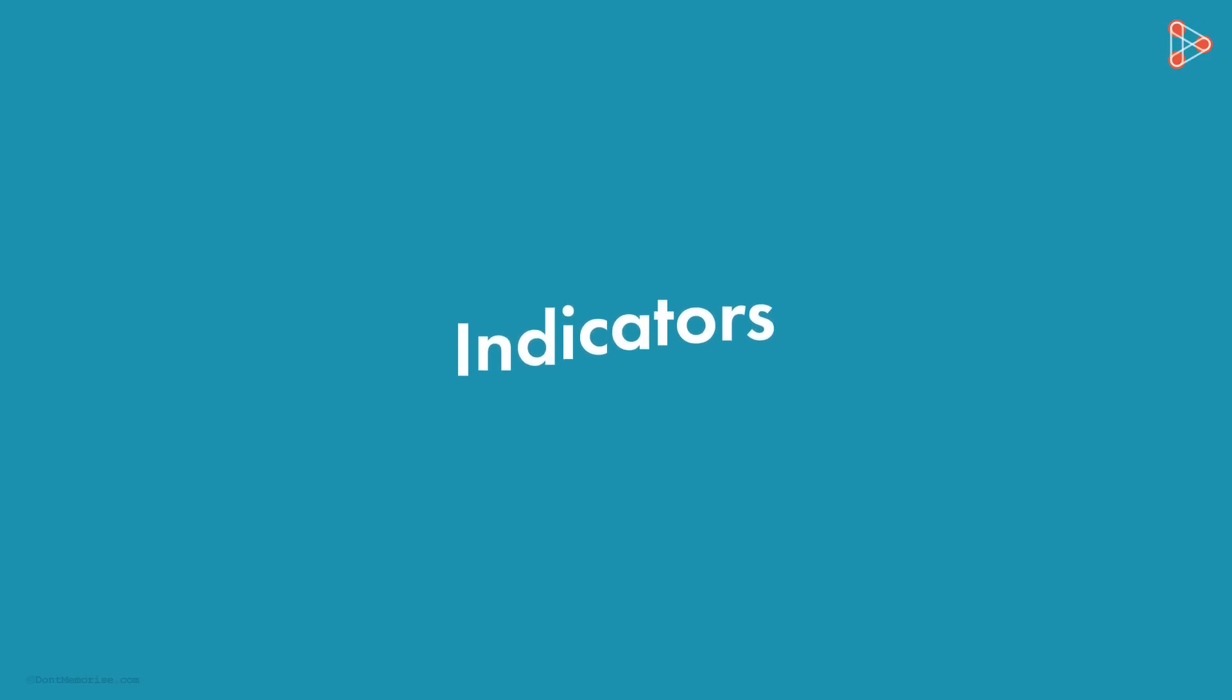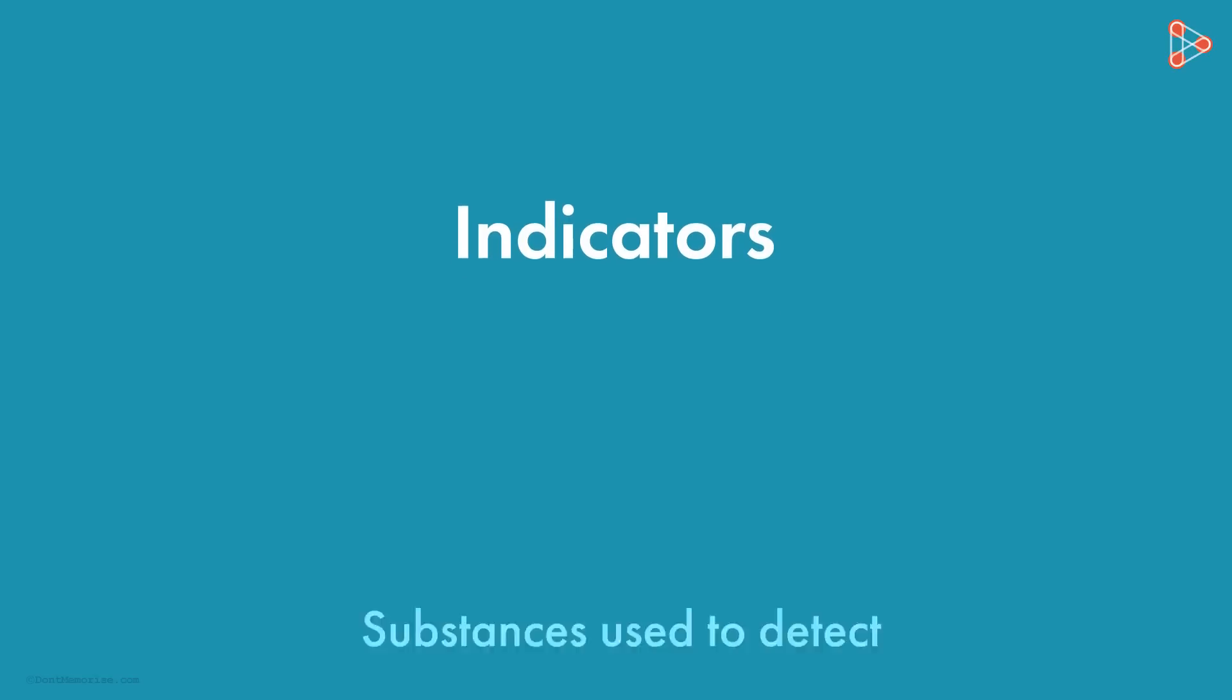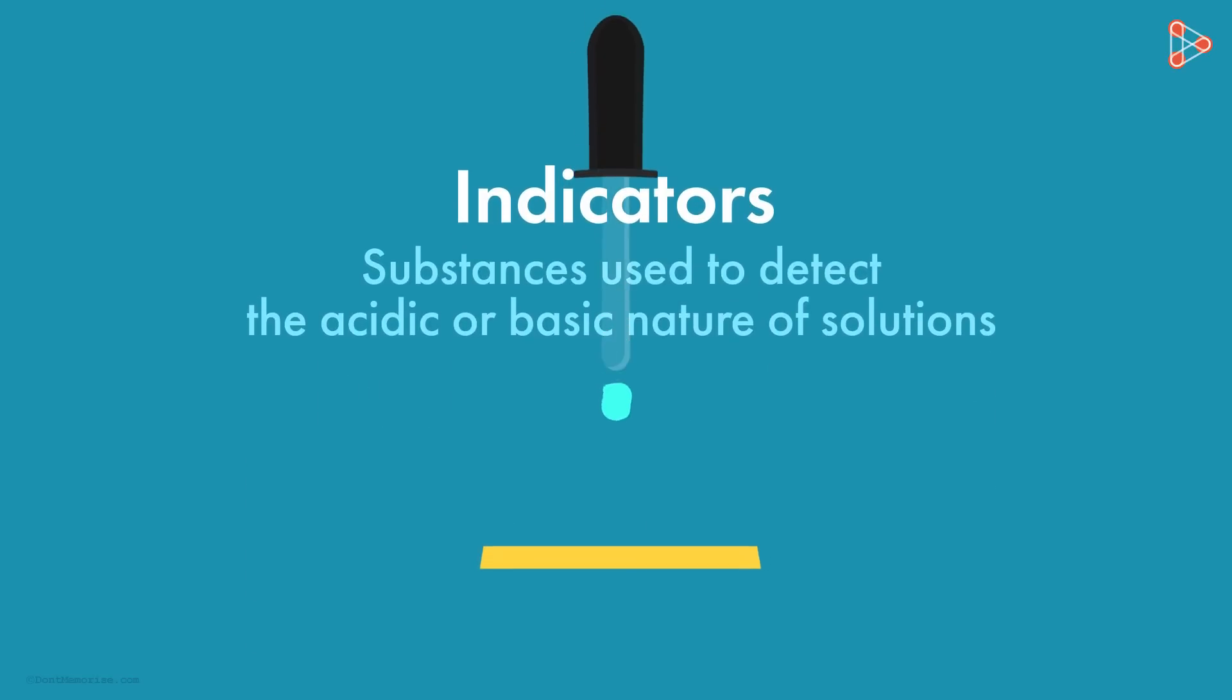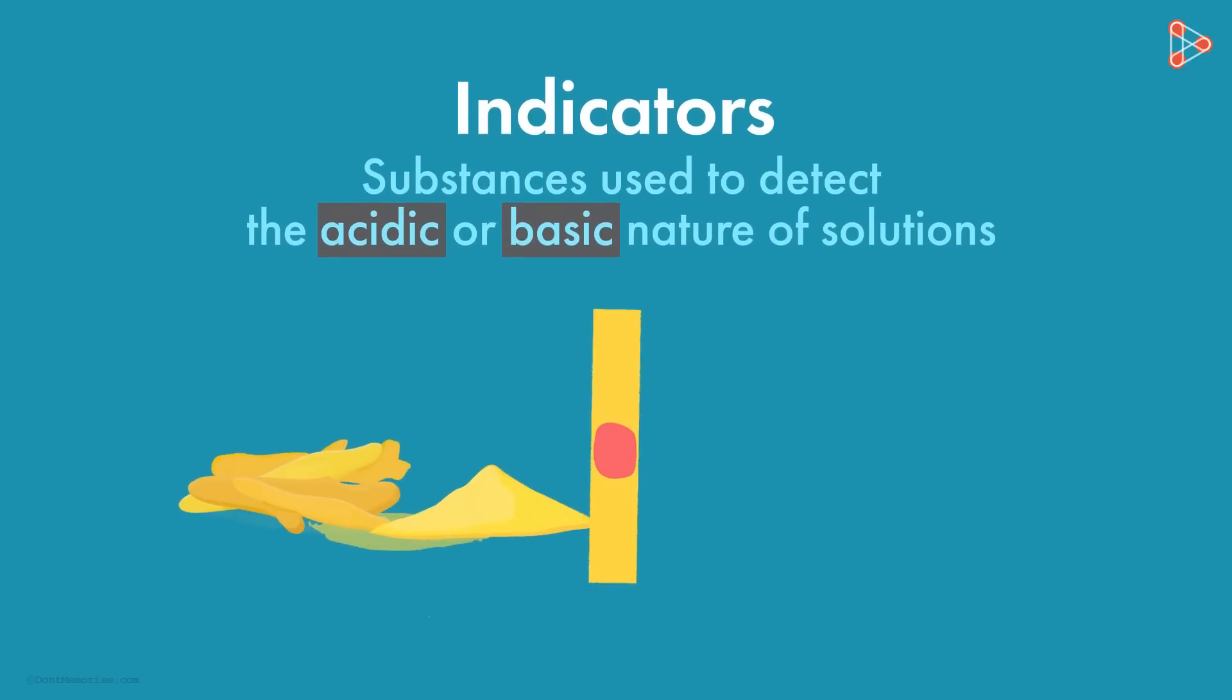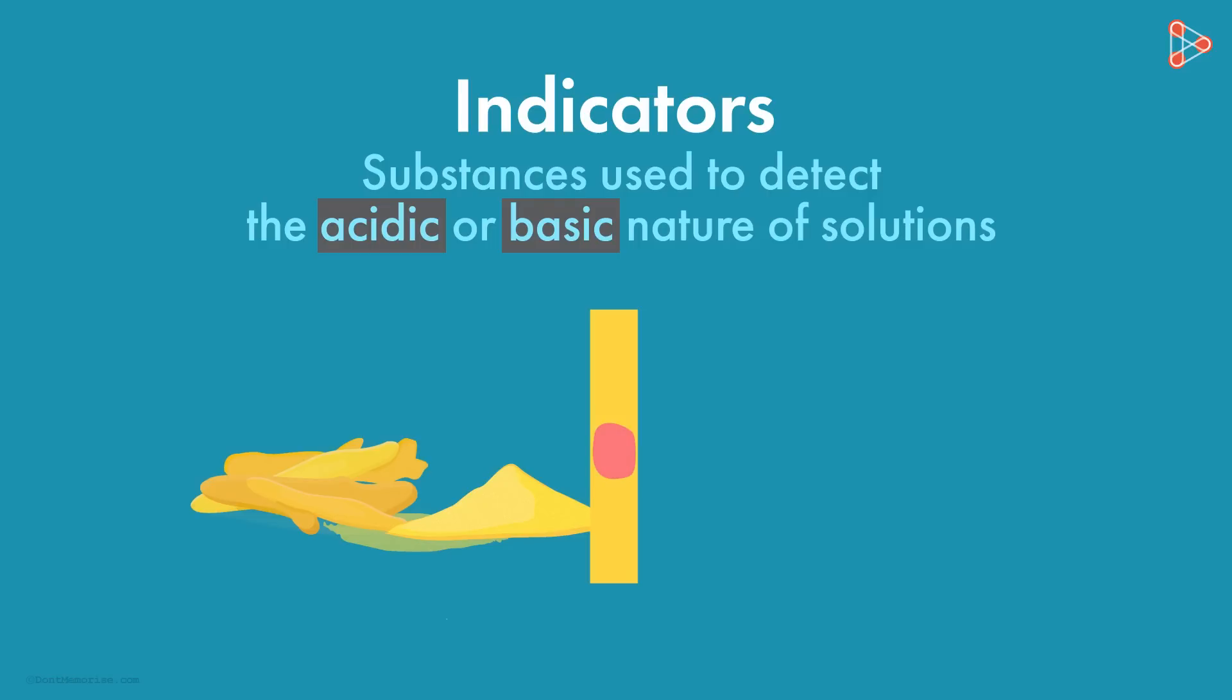The previous video got us familiar with the concept of indicators. Indicators are substances that are used to detect the acidic or basic nature of solutions. We have seen how turmeric acts efficiently as a natural indicator.